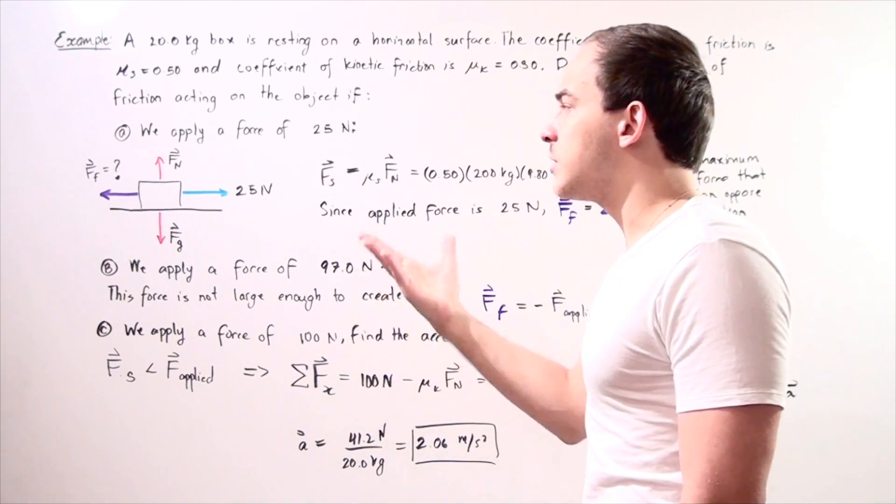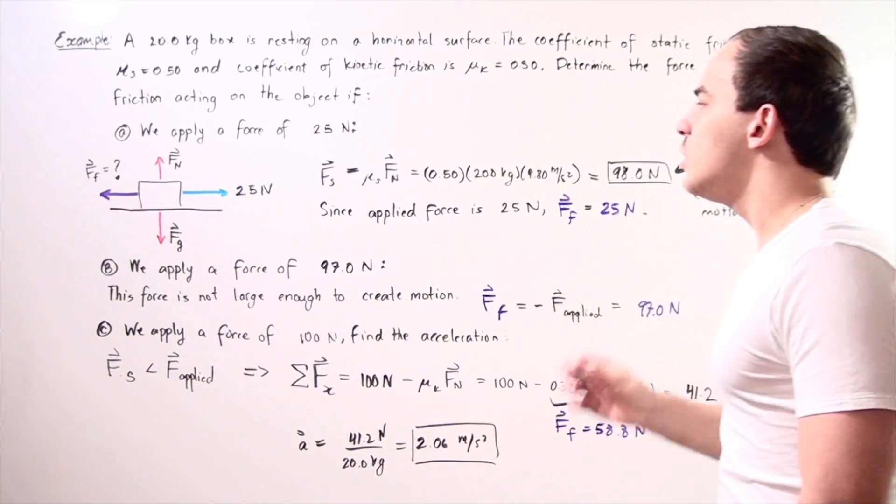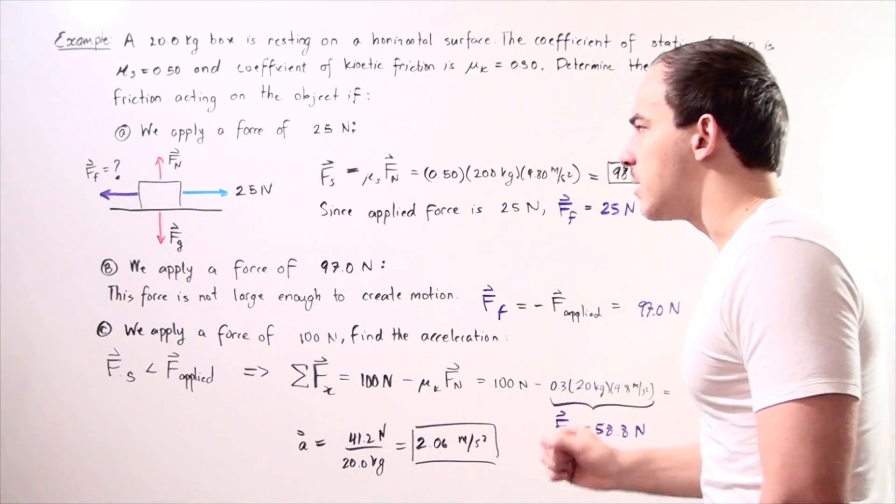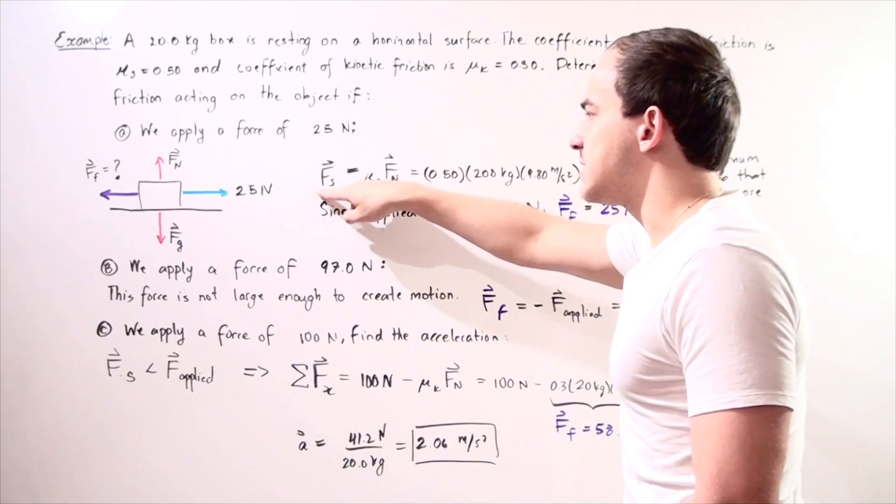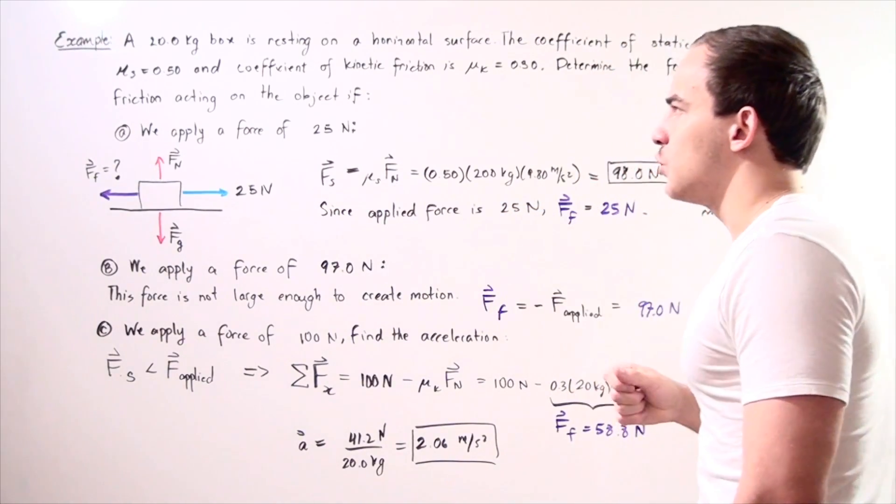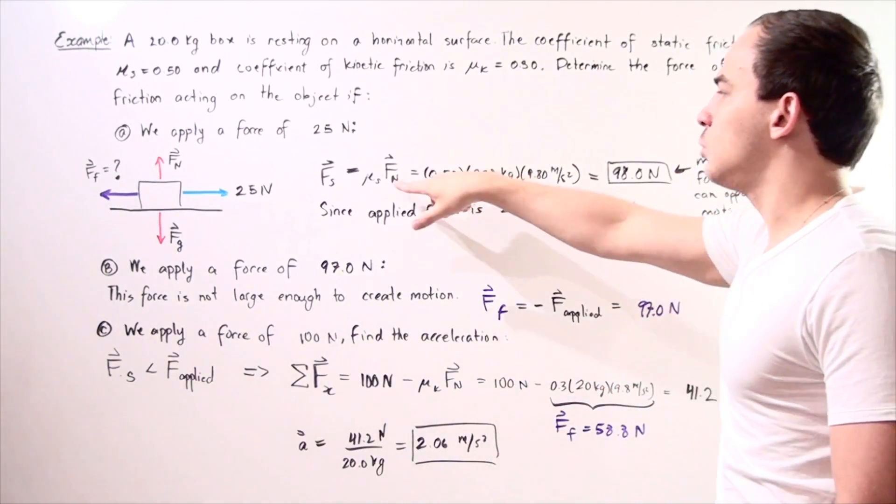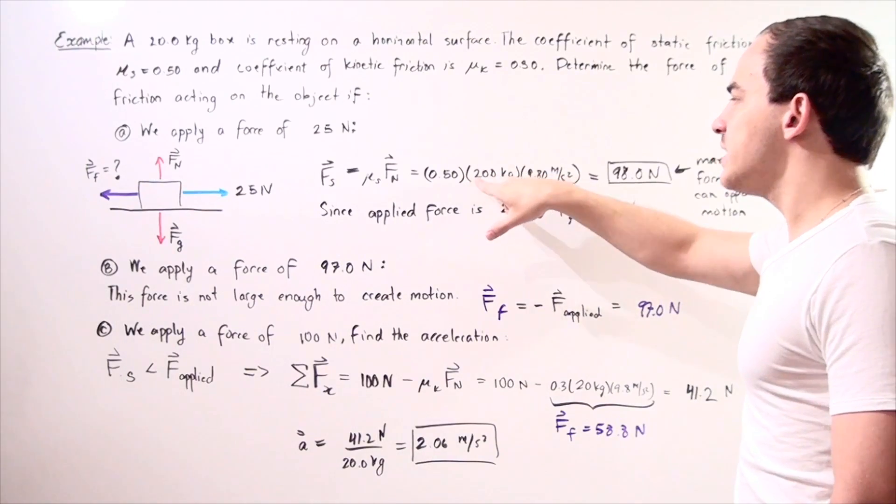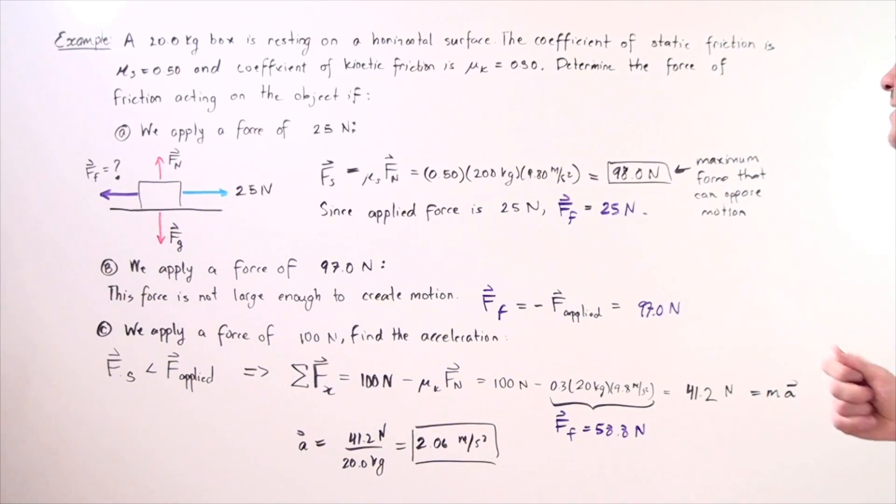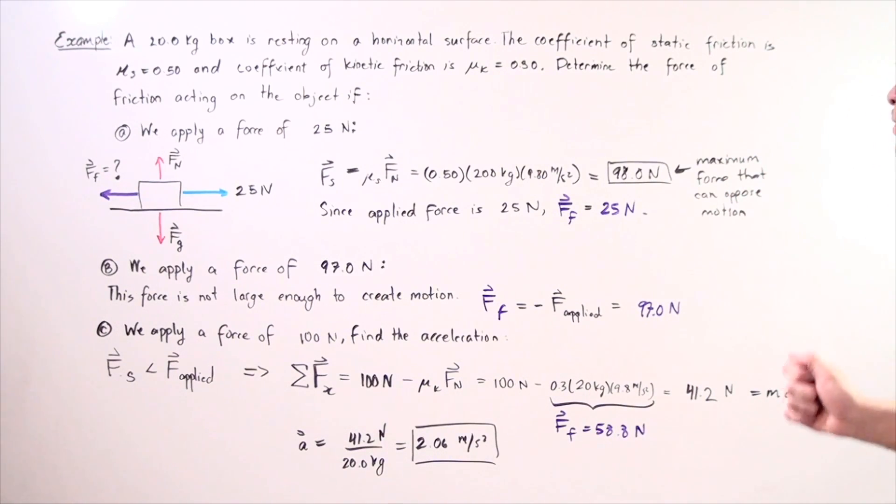To determine whether or not our box actually moves while we apply a force of 25 newtons, we want to determine the maximum frictional force due to static friction. The maximum static force is equal to, we take our coefficient of static friction and multiply it by the normal force. So, 0.5 multiplied by 20 kilograms multiplied by 9.80 meters per second squared. And we get a maximum frictional force of 98 newtons.